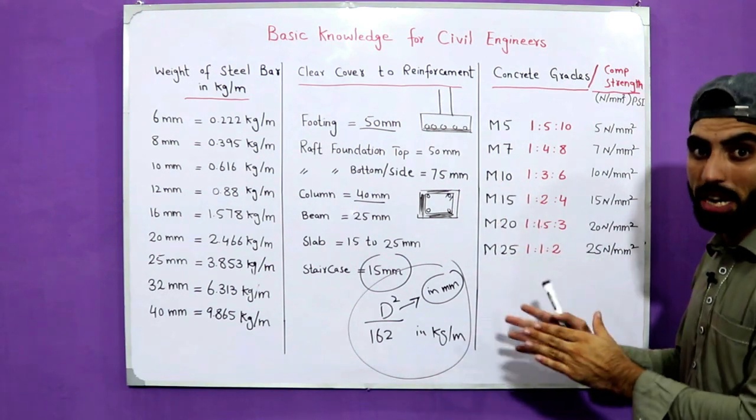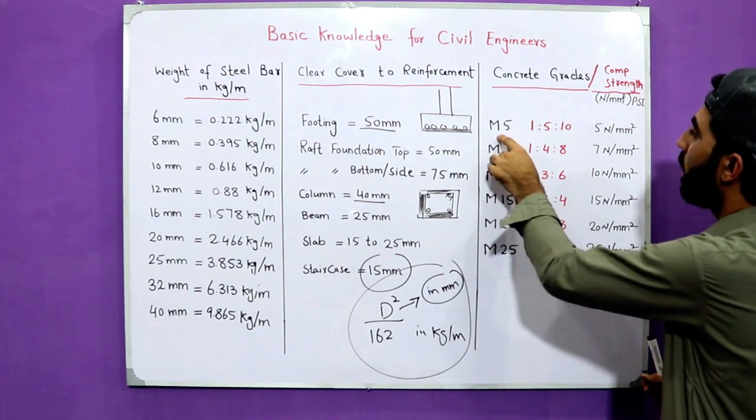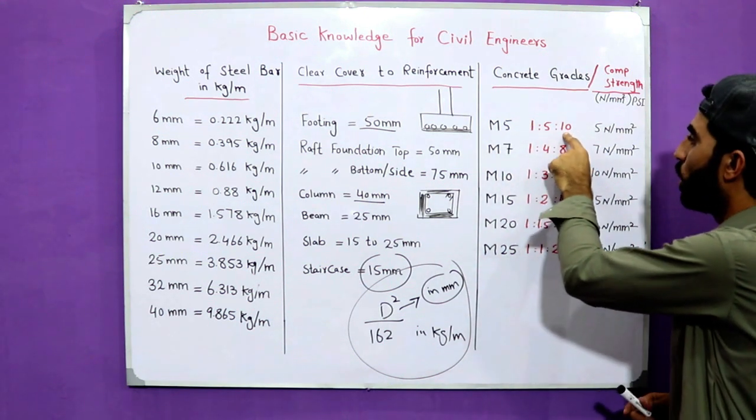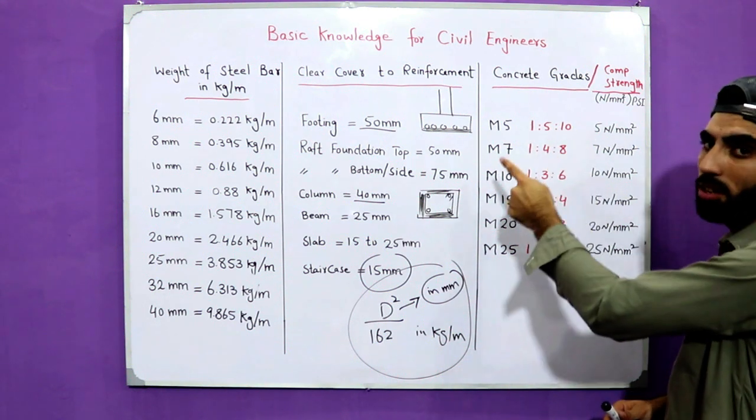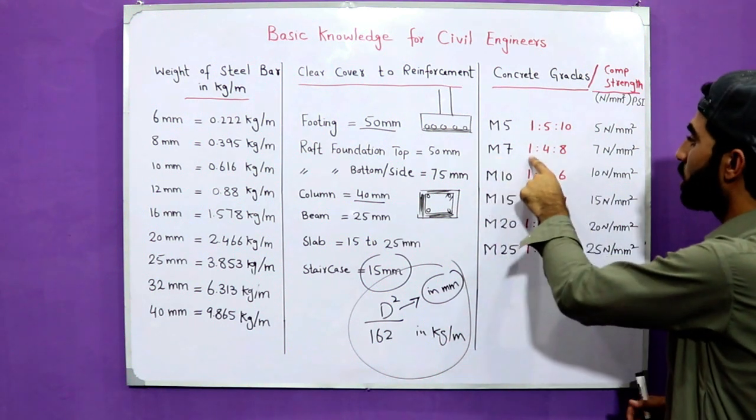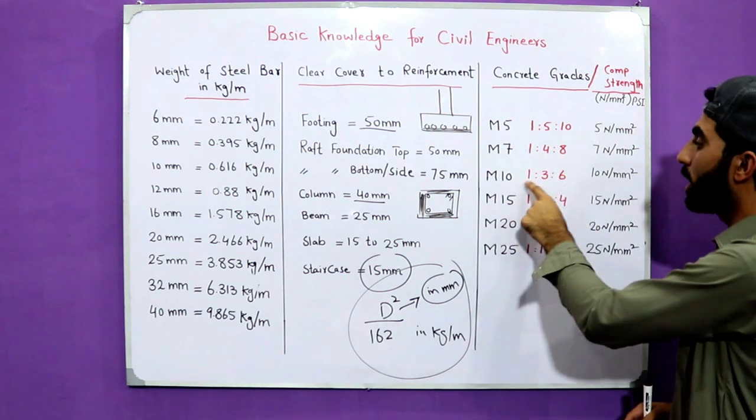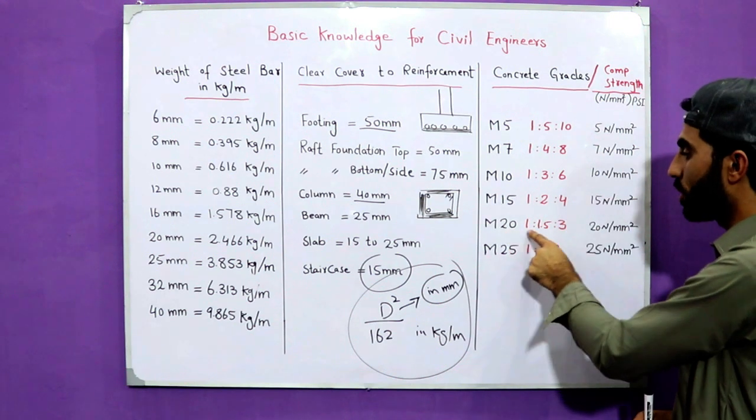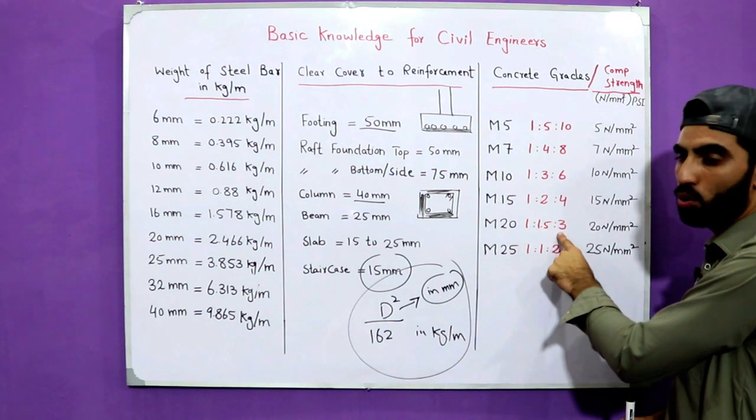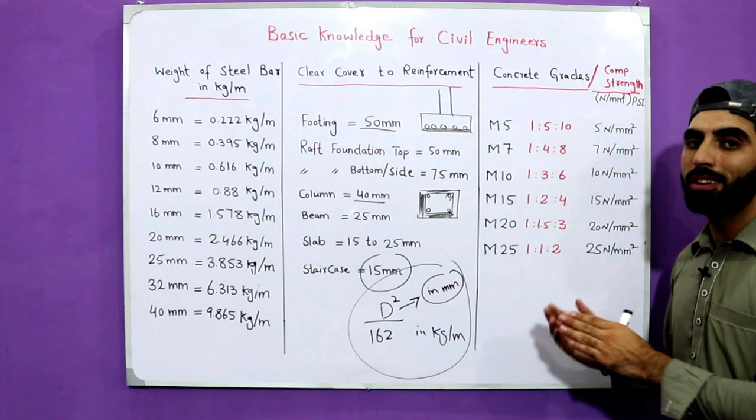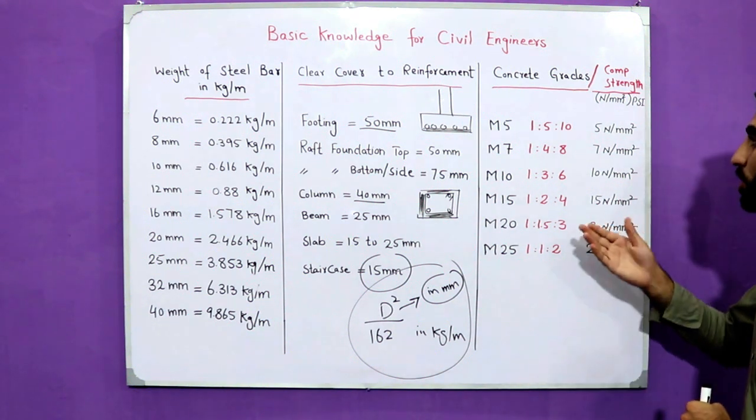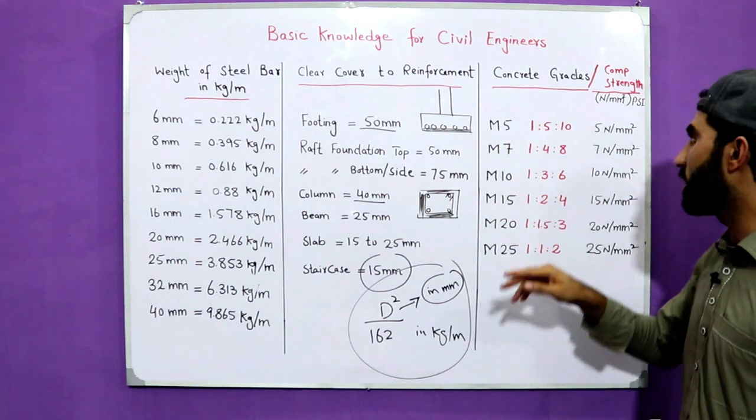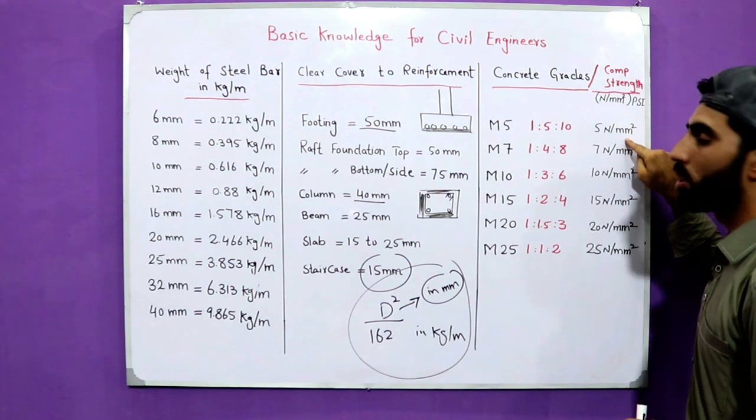For M5, M7.5, M10 - this is nominal mix, not design mix. For M5 the ratio is 1:5:10 (cement:sand:aggregate). For M7.5 it's 1:4:8, for M10 it's 1:3:6, for M15 it's 1:2:4, for M20 it's 1:1.5:3, and for M25 it's 1:1:2.